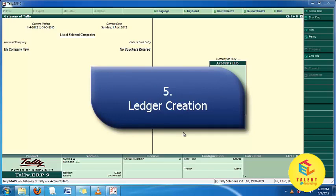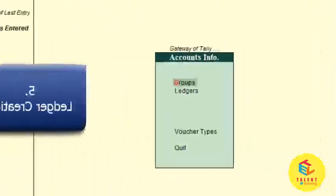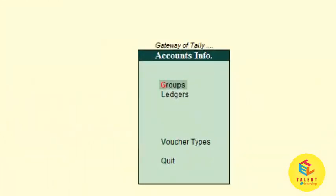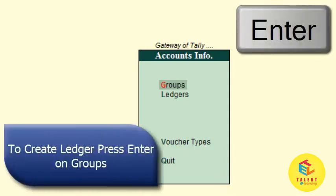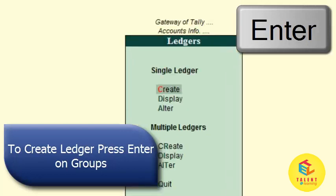Go to the Gateway of Tally and press Enter on Account Info. After going to Account Info you will get two options: Groups and Ledgers. Now go to the Ledgers option, in which you will see one option named Create.